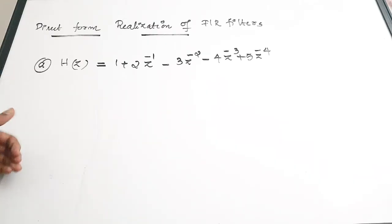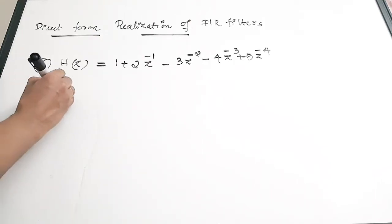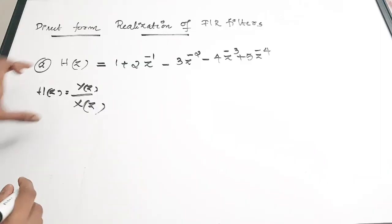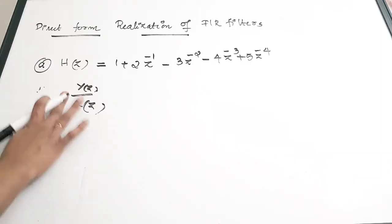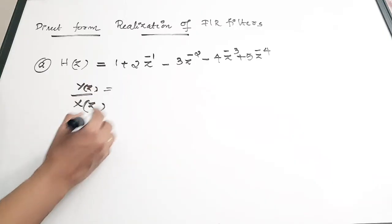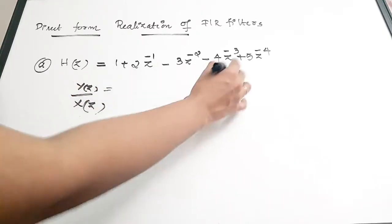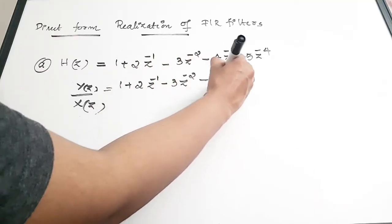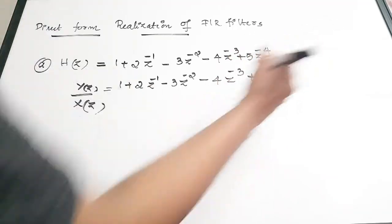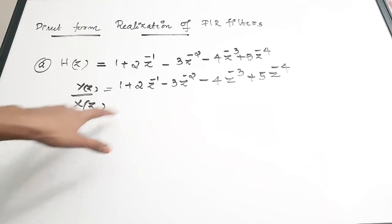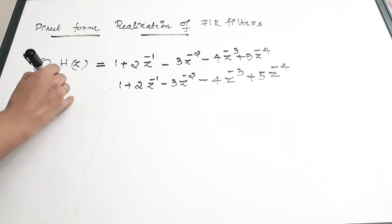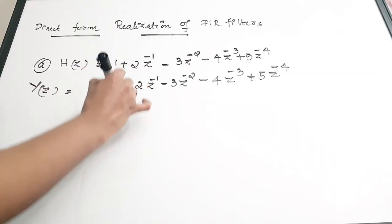The first step is to write H(Z) as Y(Z) divided by X(Z). We know that H(Z) = Y(Z)/X(Z), which is output divided by input. So Y(Z)/X(Z) = 1 + 2Z⁻¹ − 3Z⁻² − 4Z⁻³ + 5Z⁻⁴. Now cross-multiply X(Z) to get Y(Z) equal to X(Z) into that whole expression.